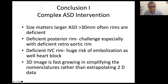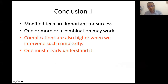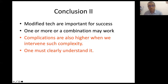To conclude: in complex ASD intervention, size does matter; deficient rims do matter; deficient posterior margin is a challenge; deficient IVC rim is a huge risk for embolization as well as heart block. 3D imaging is fast growing and helps extrapolate 2D data. Modified techniques are very important — in our lab almost 60 to 65% of cases, nearly two-thirds, are intervened with a modified technique. This reflects both the complexity of defects and the changed norms of case selection. Our overall success rate has come down from 94 to 95% to around 90%, and complications are higher with greater complexity. One should be clearly aware and prepared to face these complications.